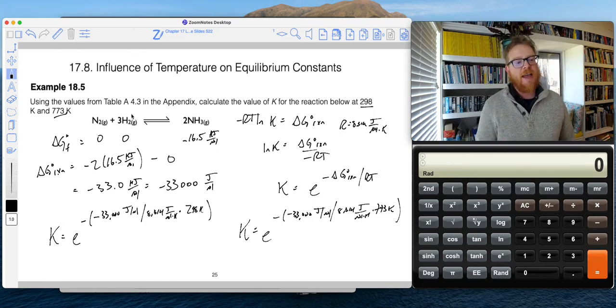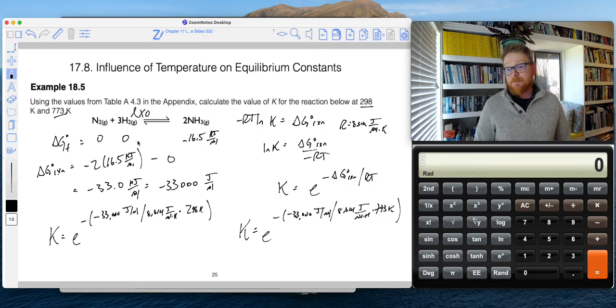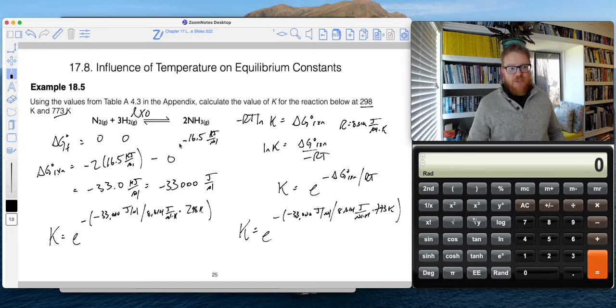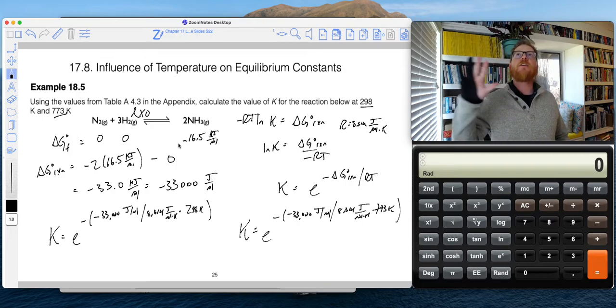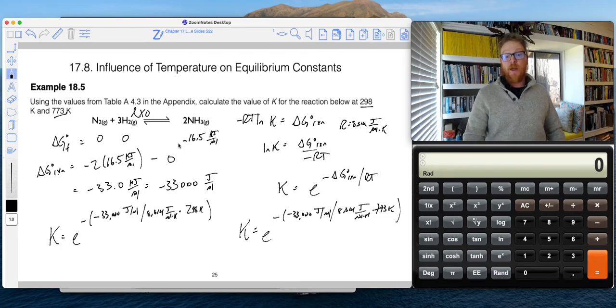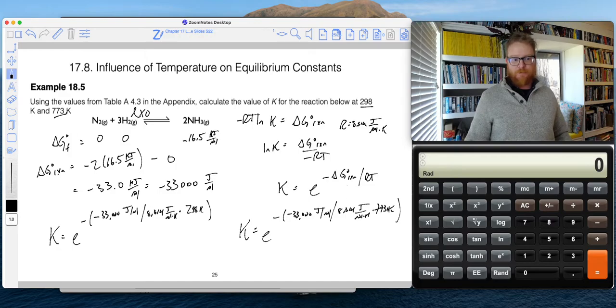And as it turns out, this reaction is exothermic. So we can also start making some predictions as to what should happen with this reaction when we increase K. And so for an exothermic reaction, let's think about this. If I increase temperature, that should decrease the value of the equilibrium constant. So let's see if that works out.